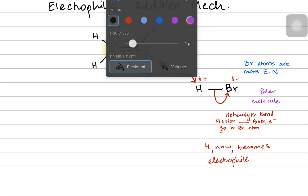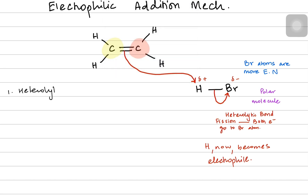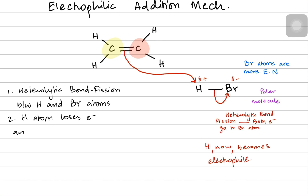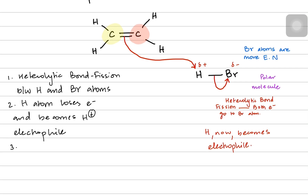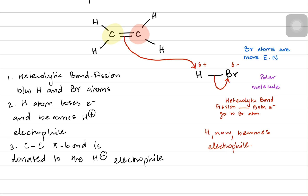Let's write the steps. Step one: heterolytic bond fission between hydrogen and bromine atoms. Step two: hydrogen atom loses its electron and becomes H⁺, the electrophile. Step three: the carbon-carbon pi bond is donated to the H⁺ electrophile.